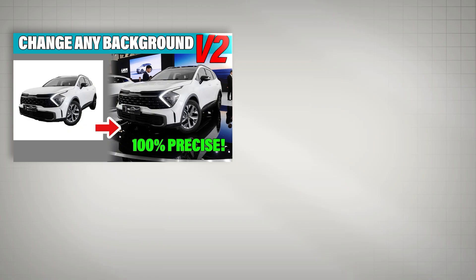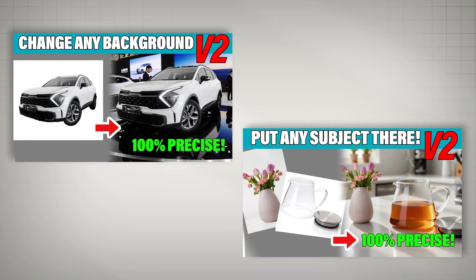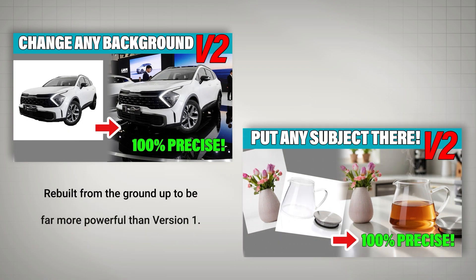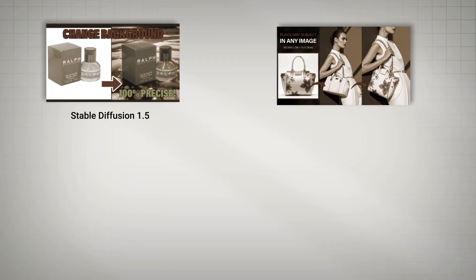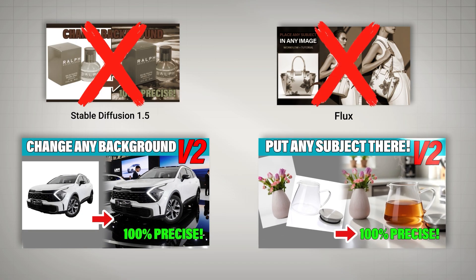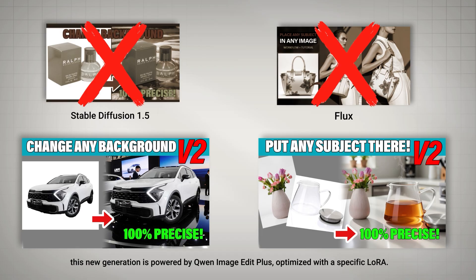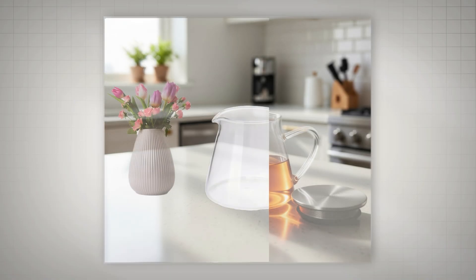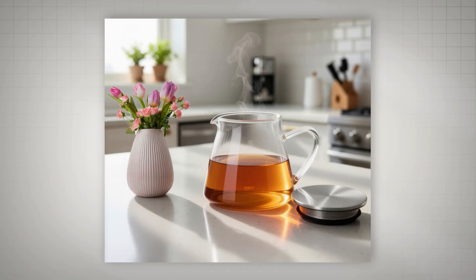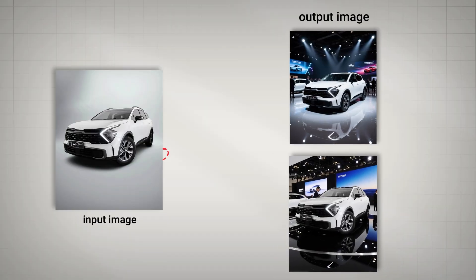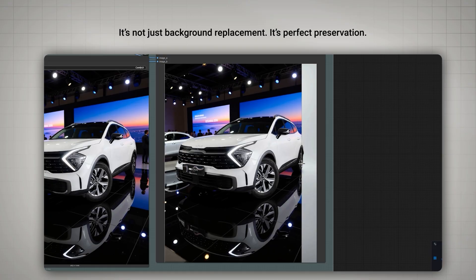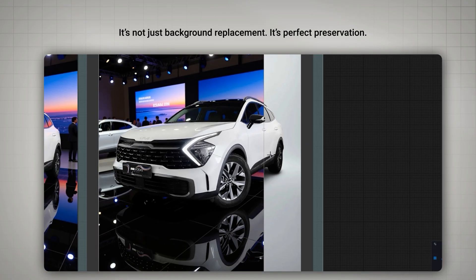This is version two of 'change background and put any subject in any background,' rebuilt from the ground up to be far more powerful than version one. Instead of relying on Stable Diffusion 1.5 or Flux, which often struggle to preserve authenticity, this new generation is powered by Quantum Image Edit Plus optimized with a specific LoRA. You choose the background or let the workflow generate one for you, and the subject automatically blends into the new scene, matching lighting and colors with insane accuracy. It's not just background replacement — it's perfect preservation.